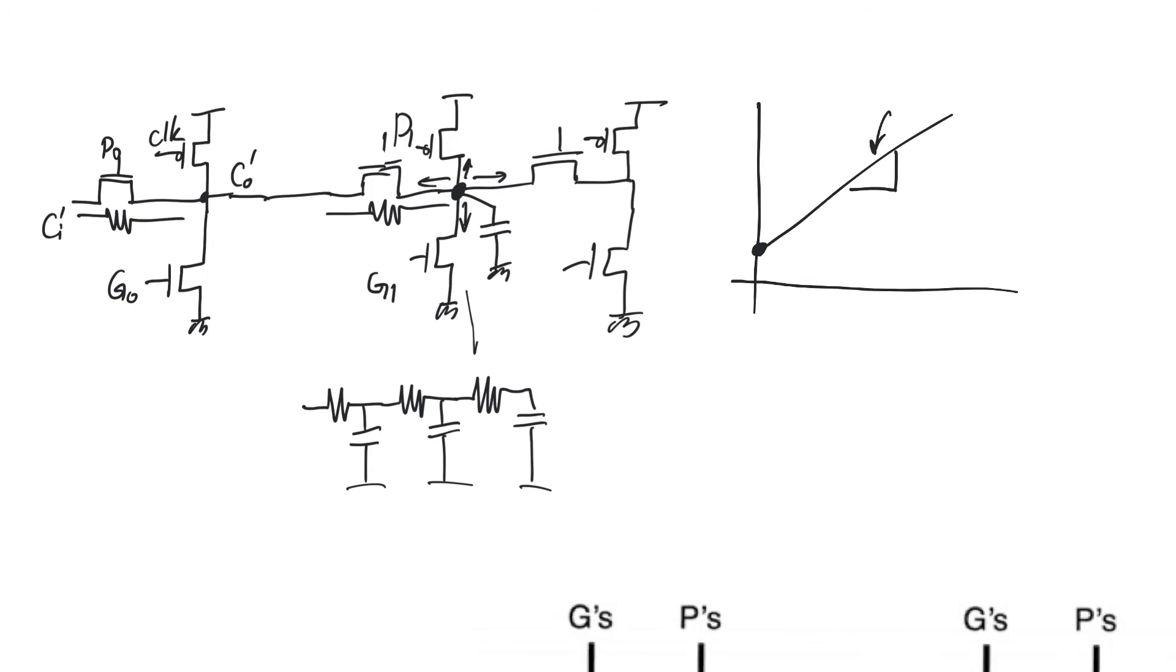Let's imagine an adder like the Manchester carry chain which has a small y-intercept because it is a pretty simple network. But it is quadratic. So for a large number of bits, it will overtake the ripple carrier and will overtake it soon for a relatively low n.